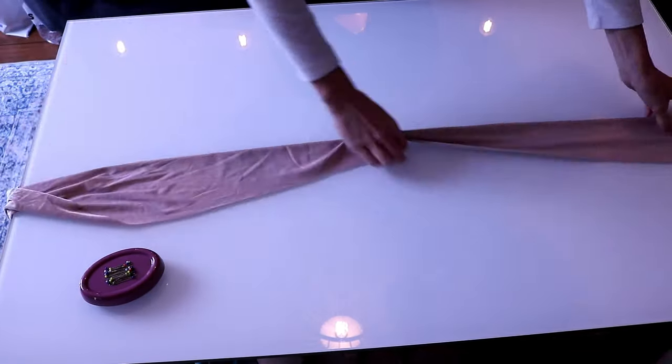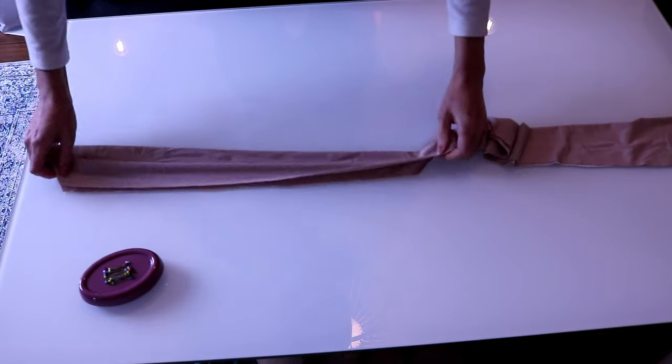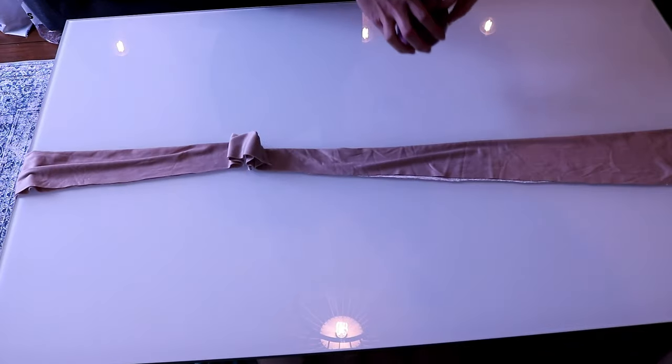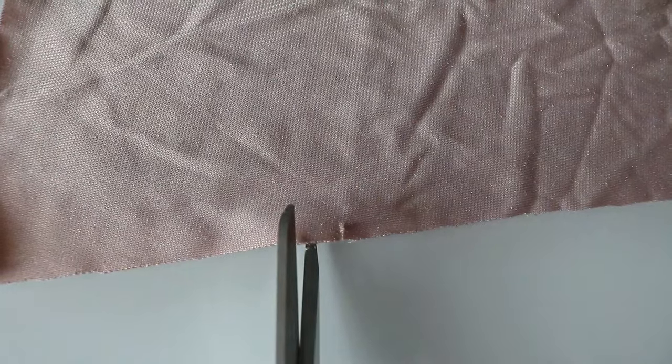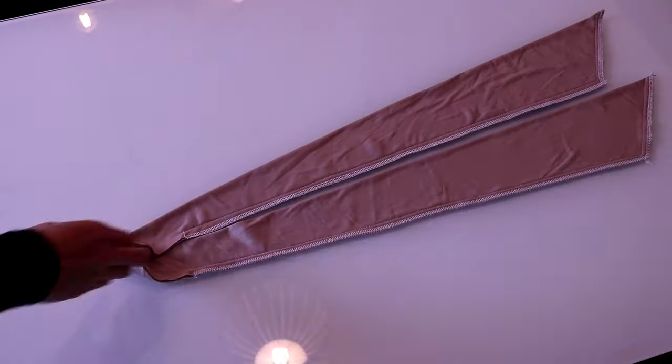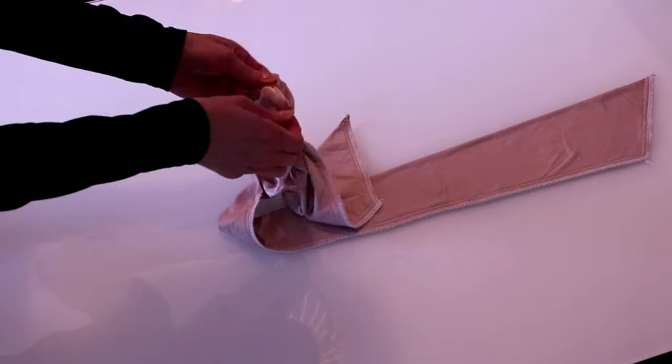Fold the necktie in half lengthwise, right sides together. This is the part which you will next leave unstitched. Clip the seam allowances at the marked points. This makes it easier to stitch. Pin along the open edge and stitch. Turn the necktie right side out.